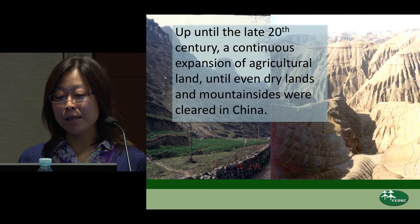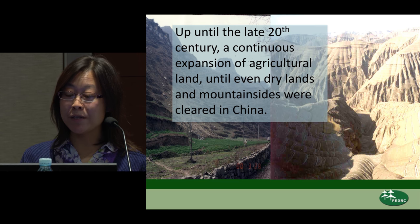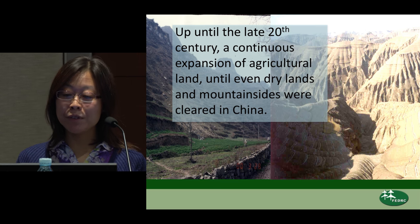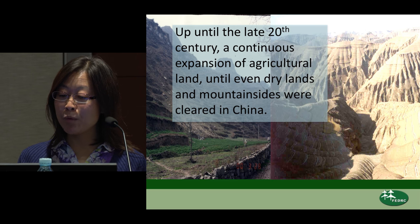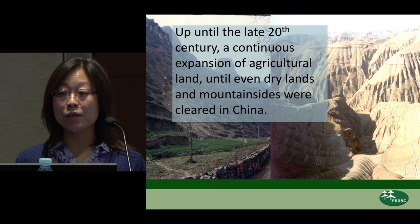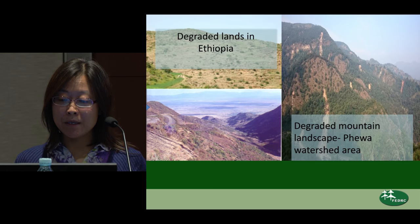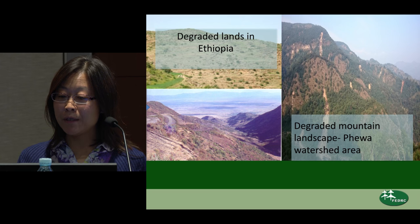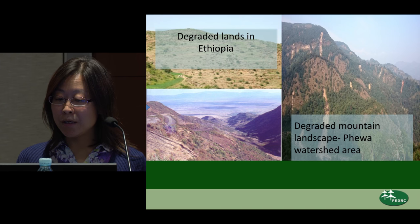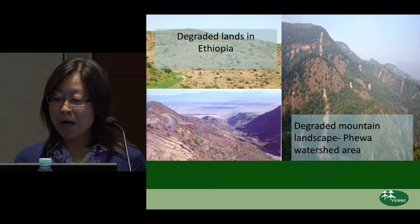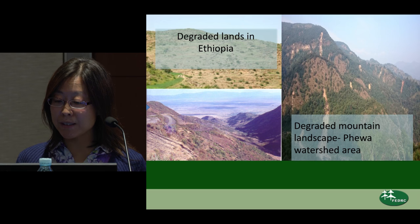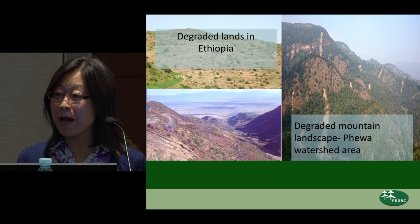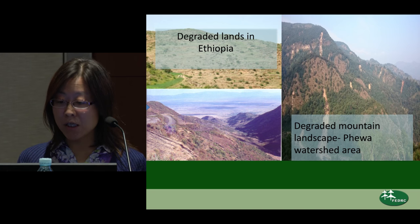The history of deforestation in China goes back many centuries through expansion of agriculture. Up until the late 20th century, China's growing population required more and more agricultural land, but we have turned around in the past 20 years. Both Ethiopia and Nepal faced deforestation due to agricultural encroachment. After Himalayan degradation was discussed in 1975 by ECOM, widespread land degradation indeed occurred according to some researchers' literature.